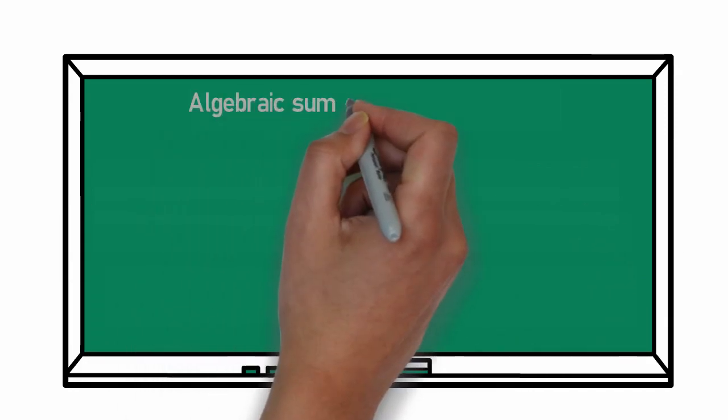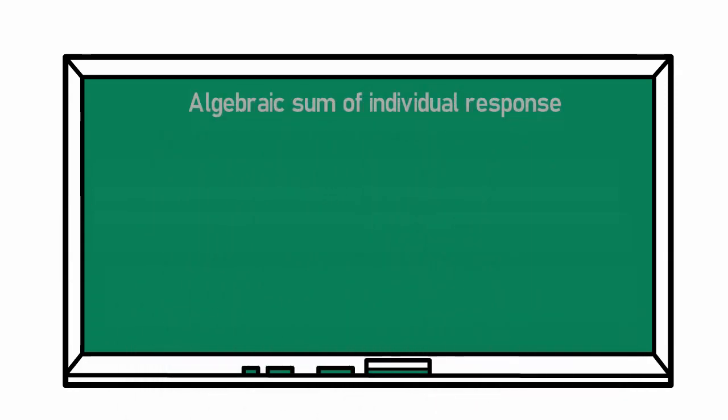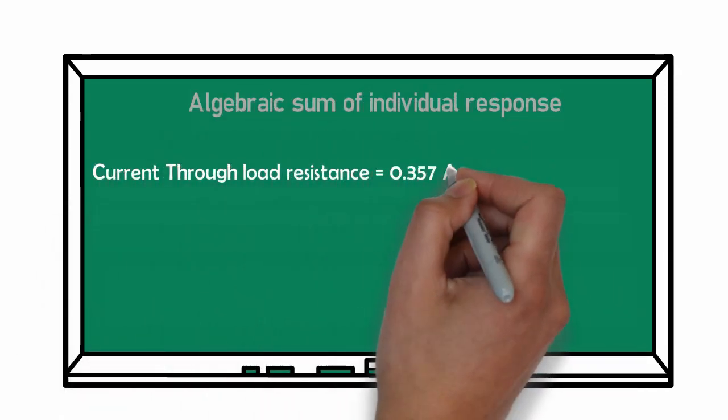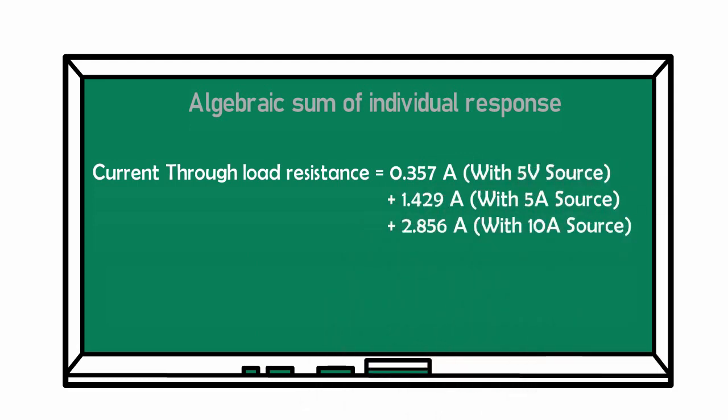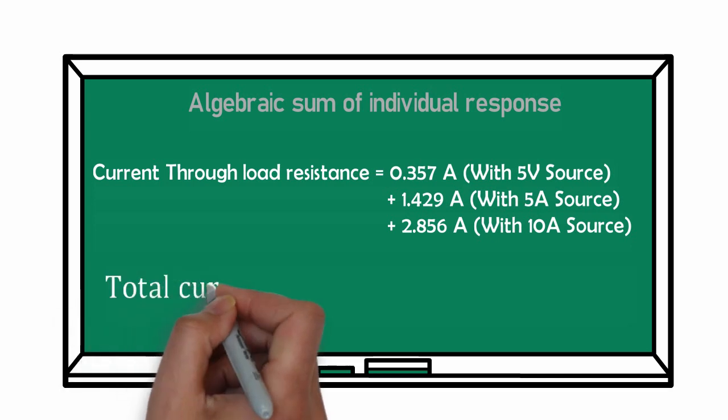After calculation of all individual response, final response could be found by vector addition. And hence, current through load resistance is 4.62A.